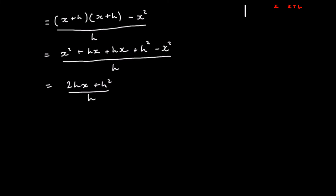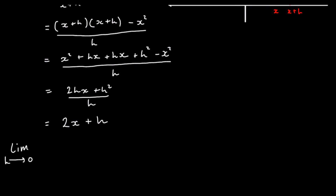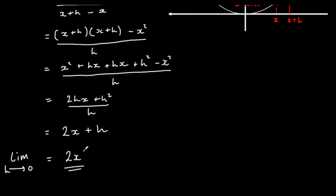We can divide through by h — dividing both terms on top by h — which gives us 2x plus h. So there's our gradient: the gradient is 2x plus h. But we are going to decrease the value of h until it reaches zero. As we make h smaller and smaller, bringing it closer and closer to our point until it is at our point, h becomes zero. So the gradient is just 2x. We have differentiated x² from first principles, and it gives us 2x.